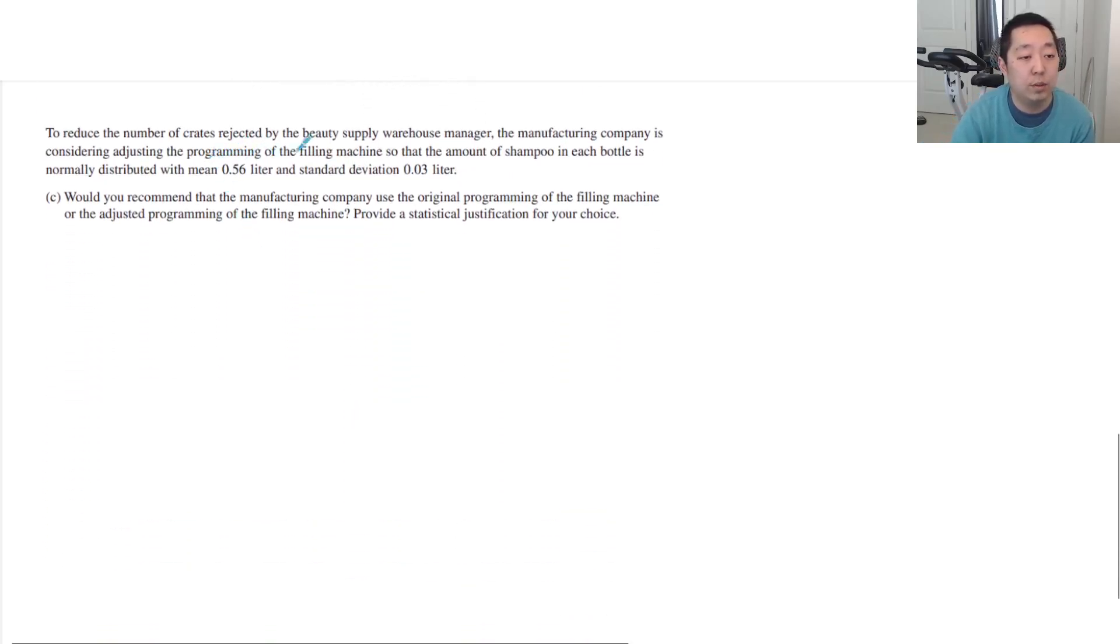To reduce the number of crates rejected by the beauty supply warehouse manager, the manufacturing company is considering adjusting the programming of the filling machine so that the amount of shampoo in each bottle is normally distributed with mean 0.56 liters and standard deviation 0.03 liters. Would you recommend that the manufacturing company use the original programming of the filling machine or the adjusted programming? Provide a statistical justification.